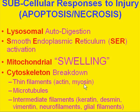The bones or cytoskeleton is also digested. The thin filaments are broken down: actin, myosin, microtubules, keratin, desmin, vimentin, neurofilaments, glial filaments. Everything associated with the structural skeleton of the cell eventually digests, hydrolyzed by virtue of apoptotic changes if it's part of normal cell replacement, or necrosis if it's a pathologic process.